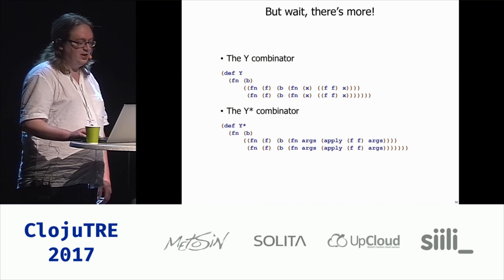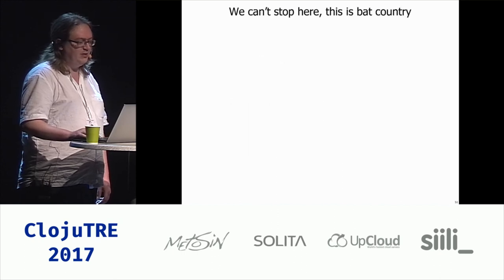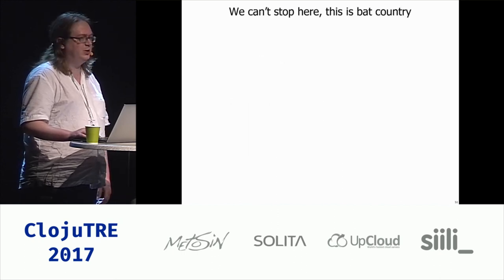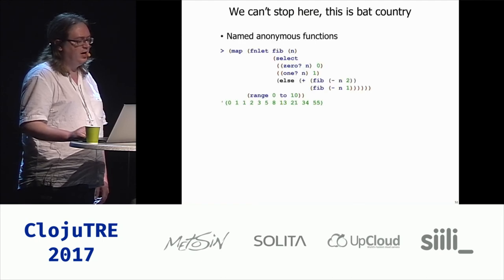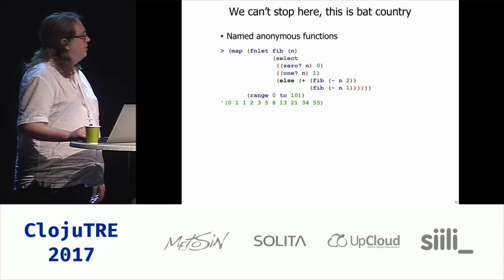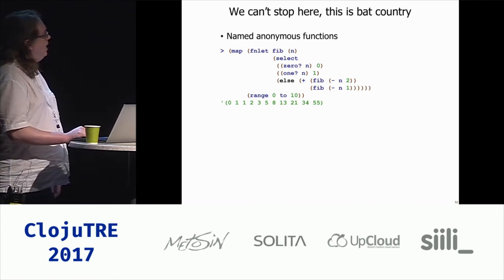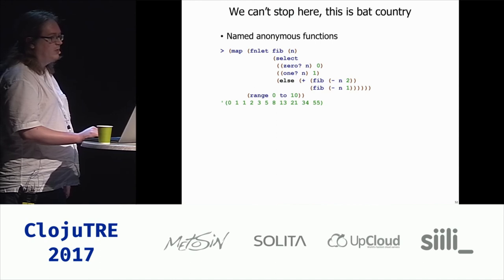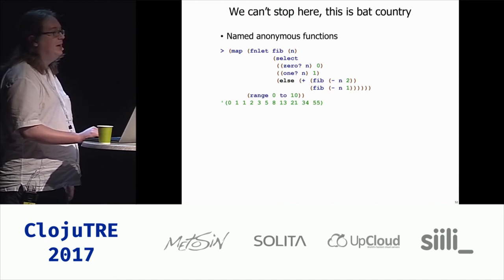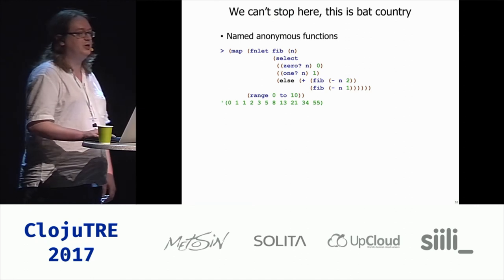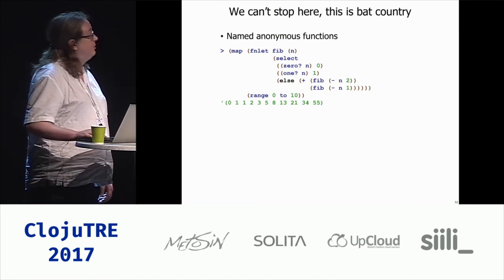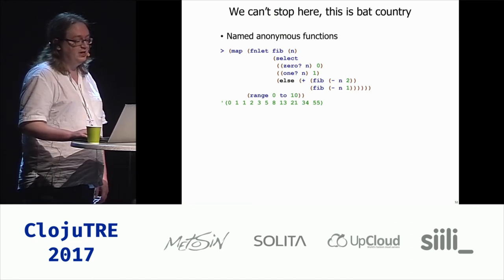I got to thinking about that — that's really cool, but what else can we do with it? With a little extra macro help, we now have a primitive in the language syntax for creating named anonymous functions. So you can write recursive anonymous functions, and there's your Fibonacci sequence done as a map.